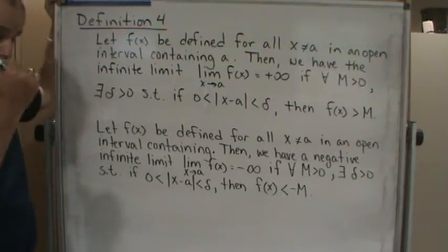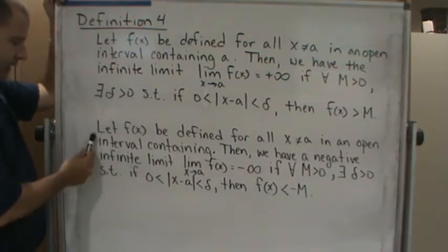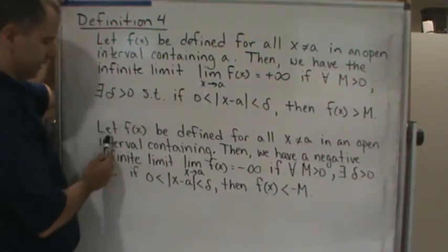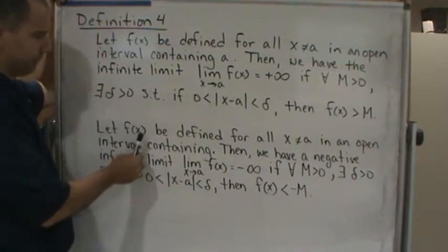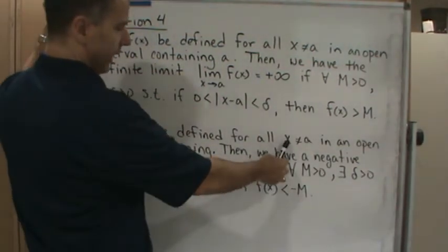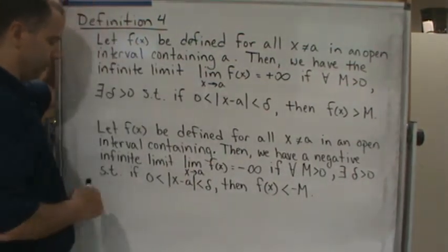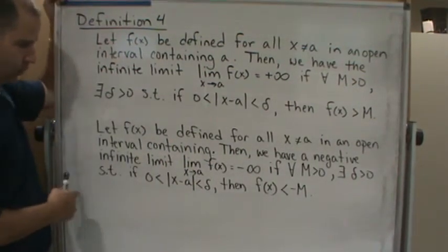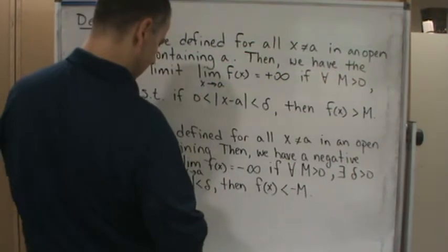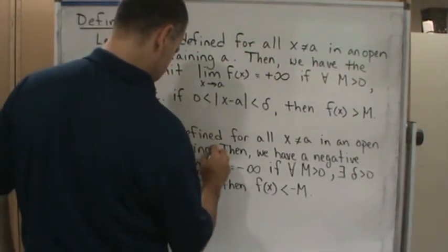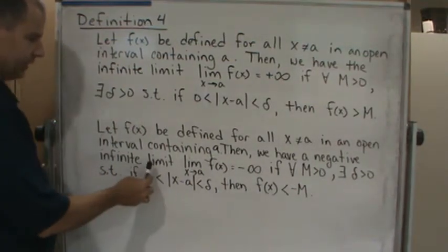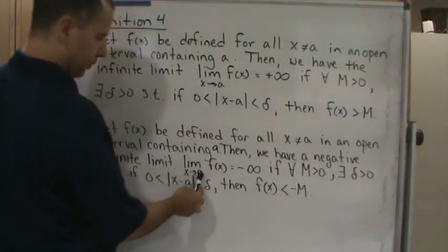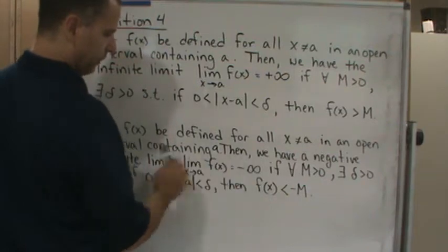Similarly, for negative infinity: let f(x) be defined for all x not equal to a in an open interval containing a. Then we have a negative infinite limit: the limit as x approaches a of f(x) equals negative infinity.